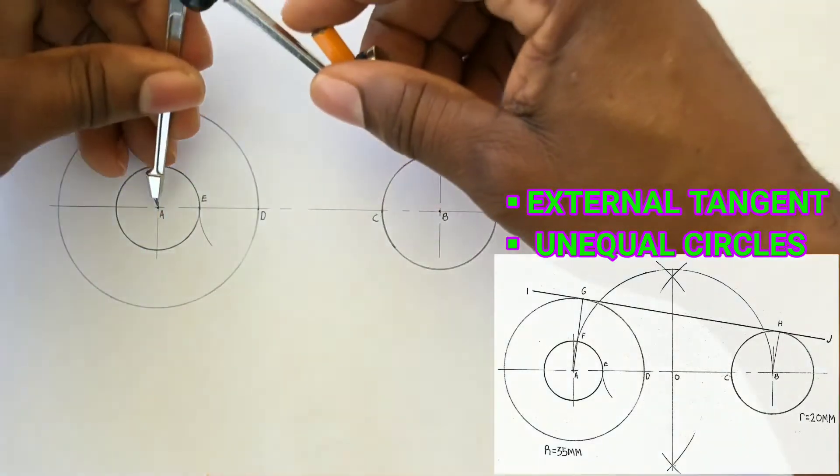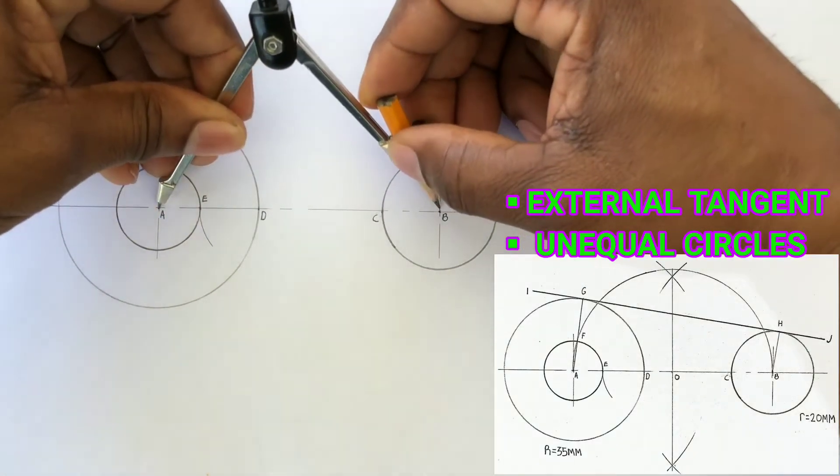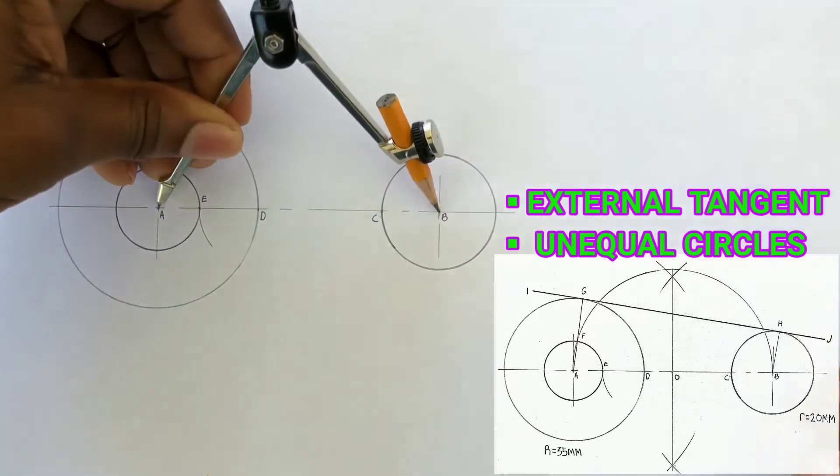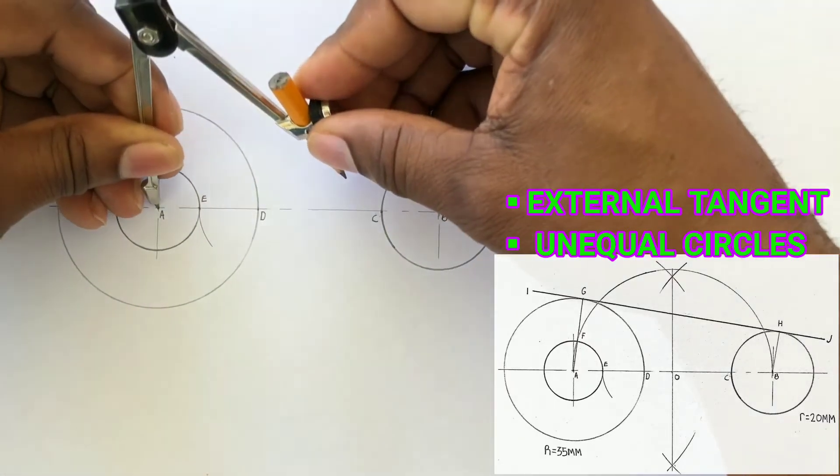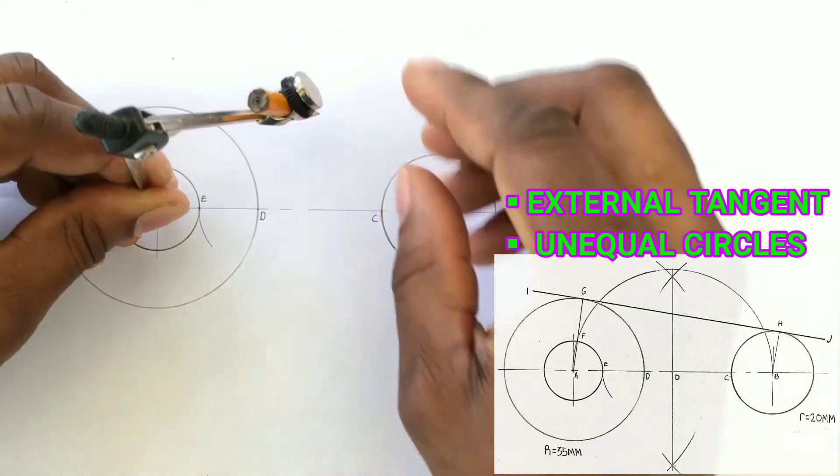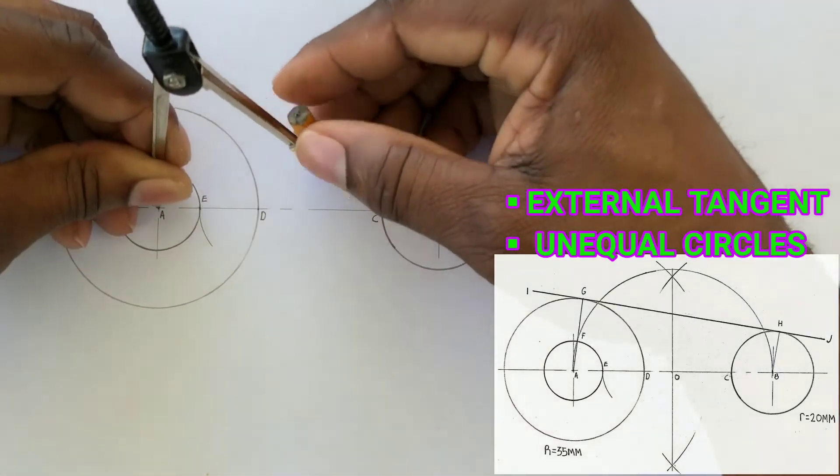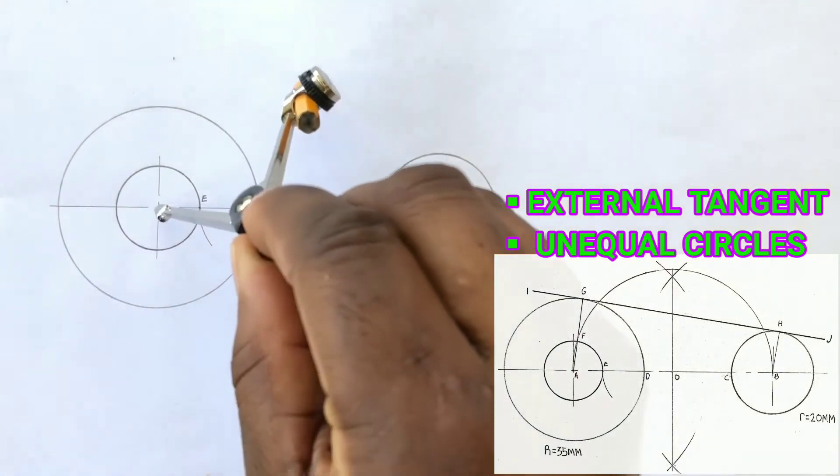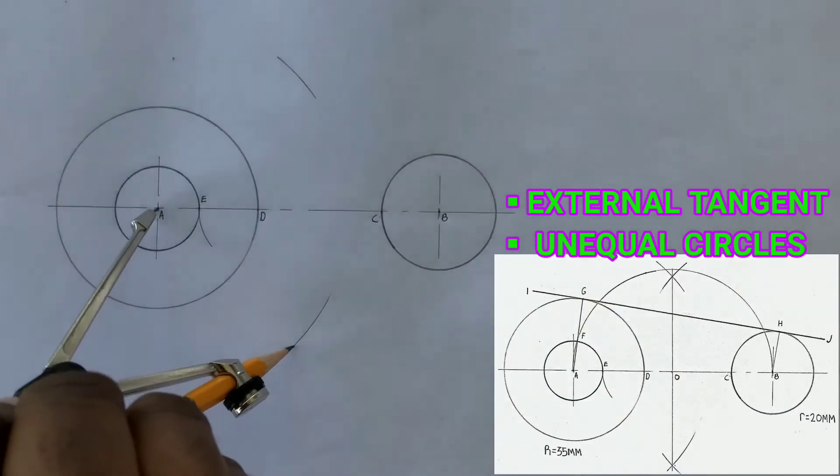Next we will bisect AB. Open the compass to more than half of AB and scribe intersecting arcs above the line AB from A and also from B.